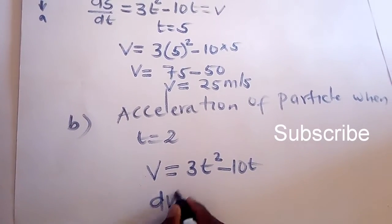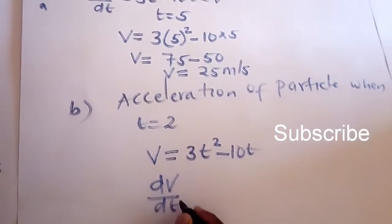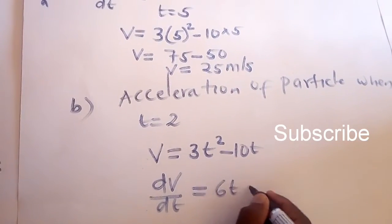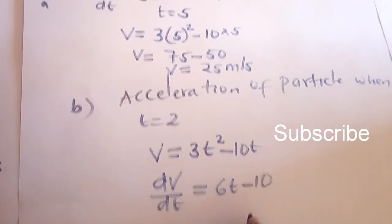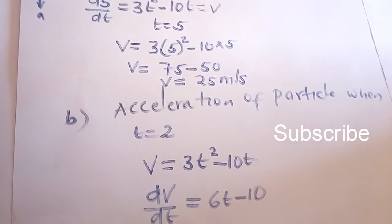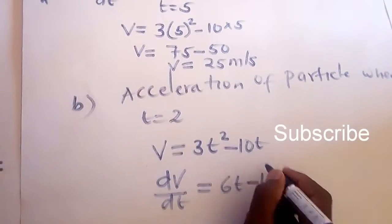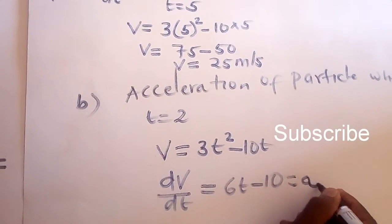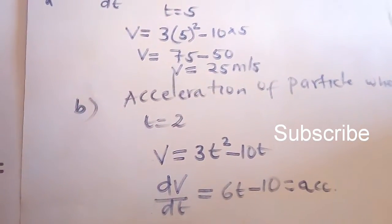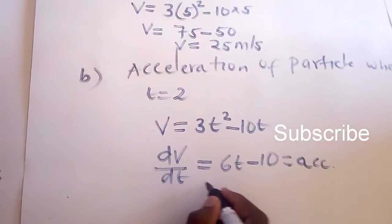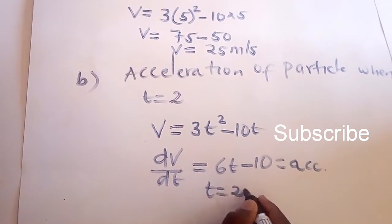This is going to be 6t minus 10. This is acceleration in terms of t, but we know our t is equal to 2.